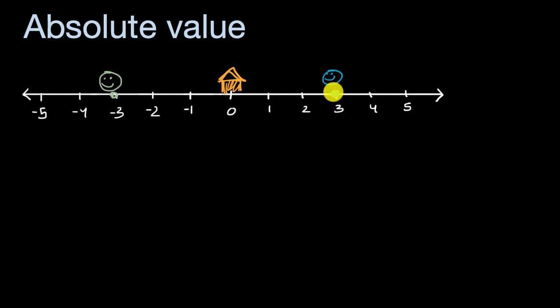But what we might care about is just how far are we from the school? And so there you could say, well, we're each exactly three miles from the school. You're three miles from the school, and I am three miles from the school. And that's what absolute value is actually trying to get at.